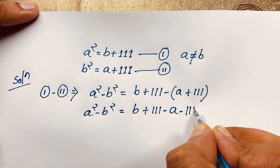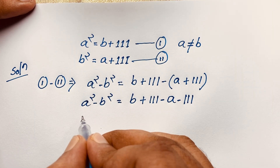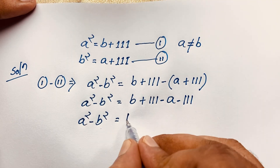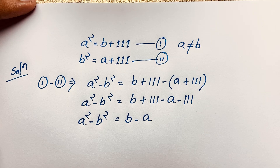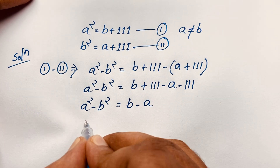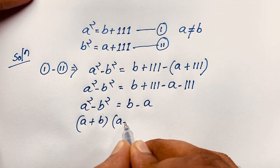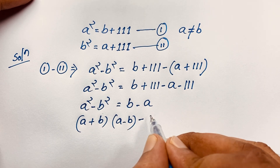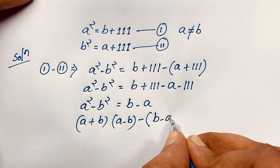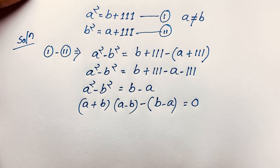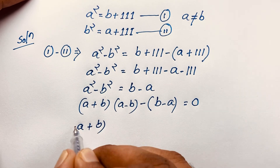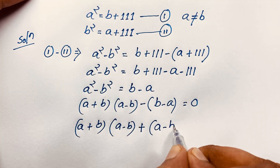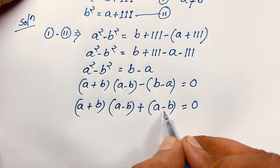Now here, a squared minus b squared equals b plus 111 minus a minus 111. The 111s cancel out, giving us b minus a. On the left side, a squared minus b squared factors using the difference of squares identity: it equals (a + b)(a − b). So we have (a + b)(a − b) equals b minus a, which is the same as negative (a − b).